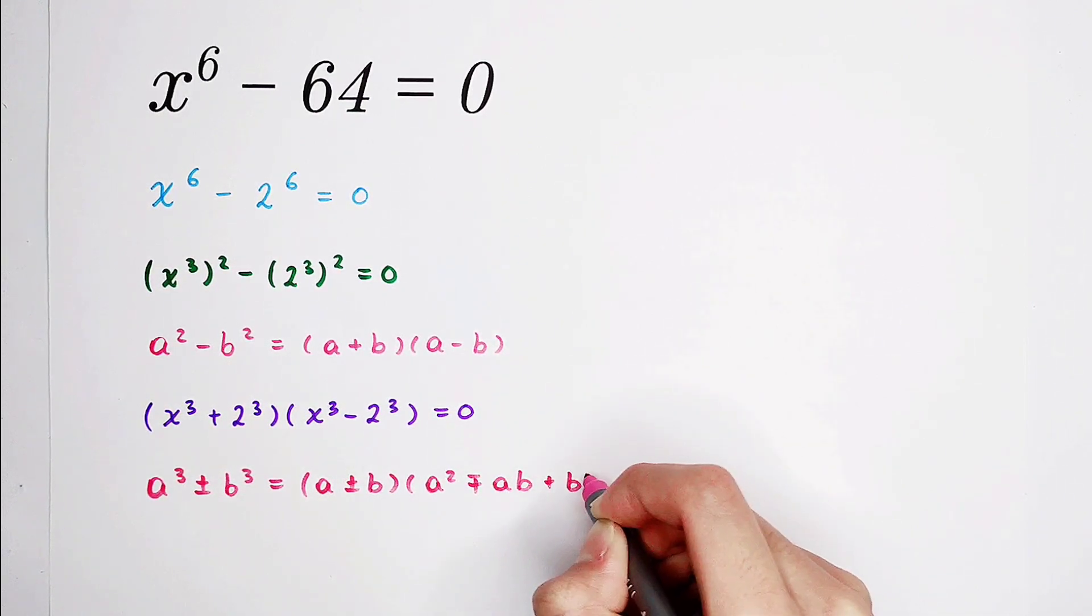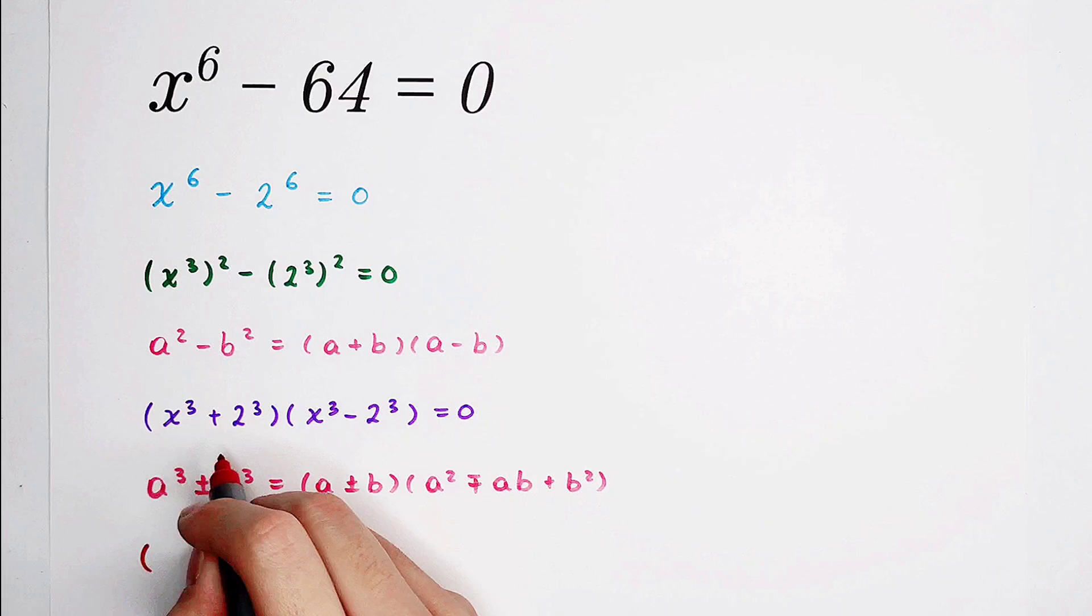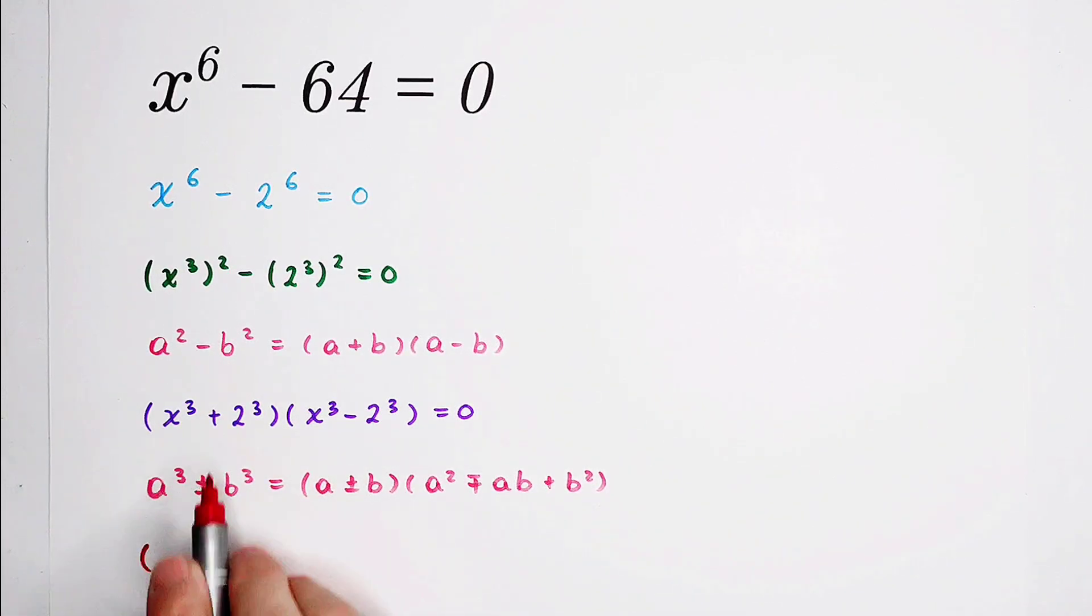Here, pay attention. So now it's going to be x cubed plus 2 cubed. Here, x is a, 2 is b.